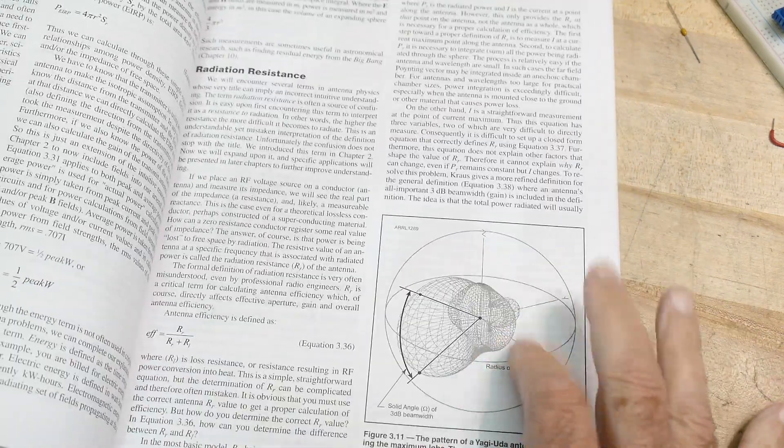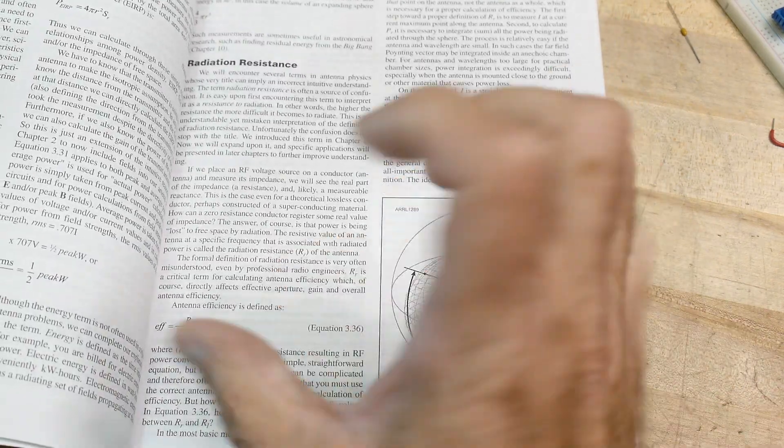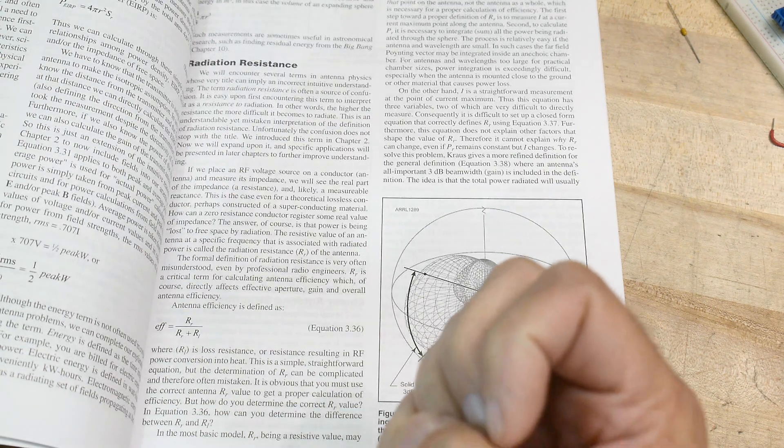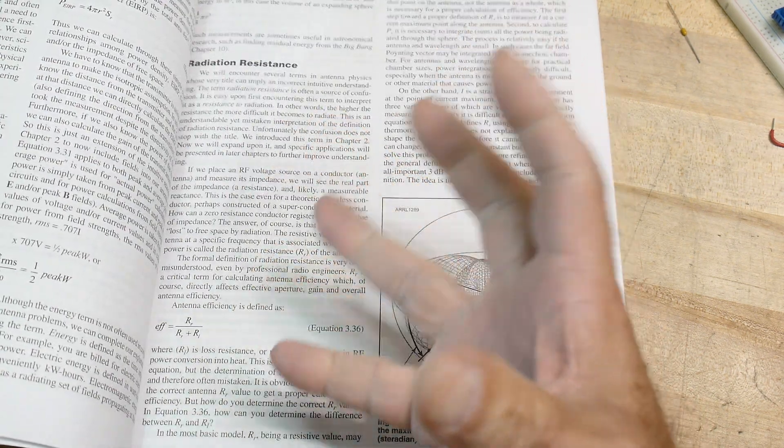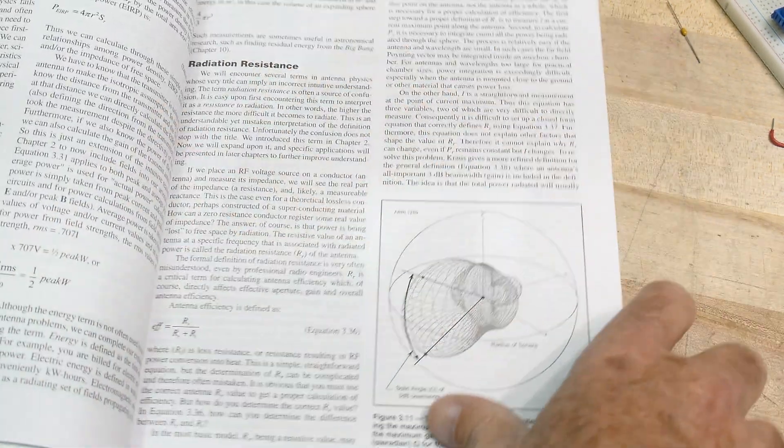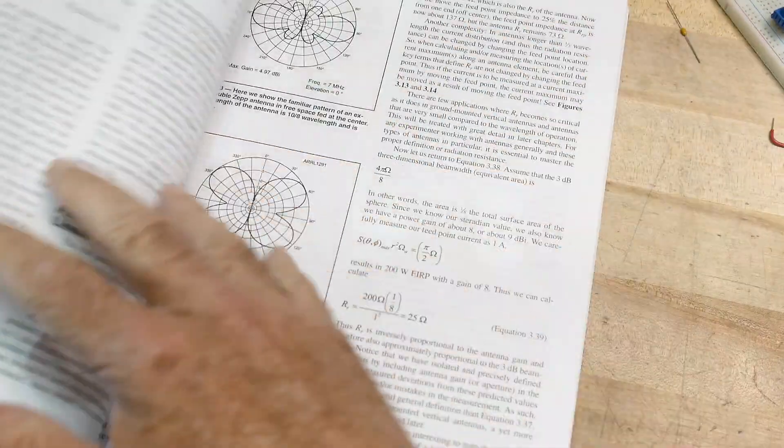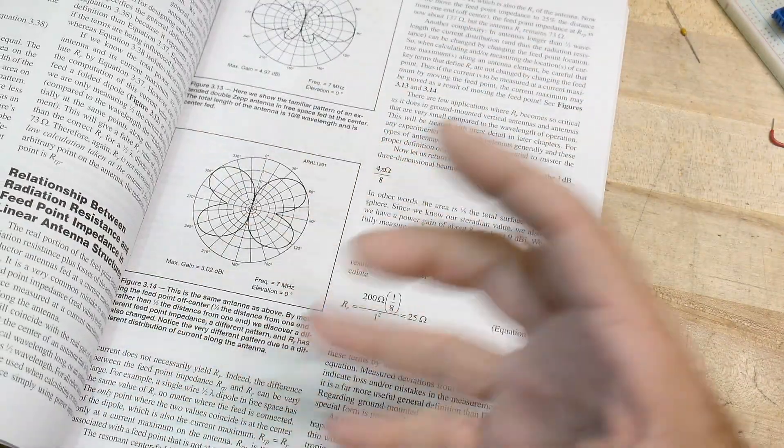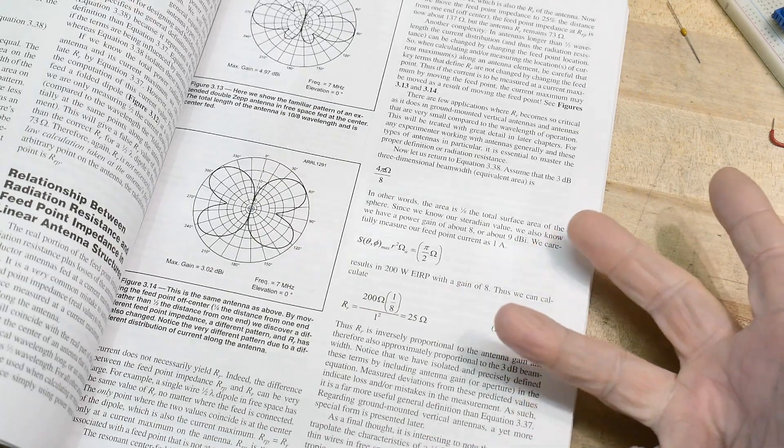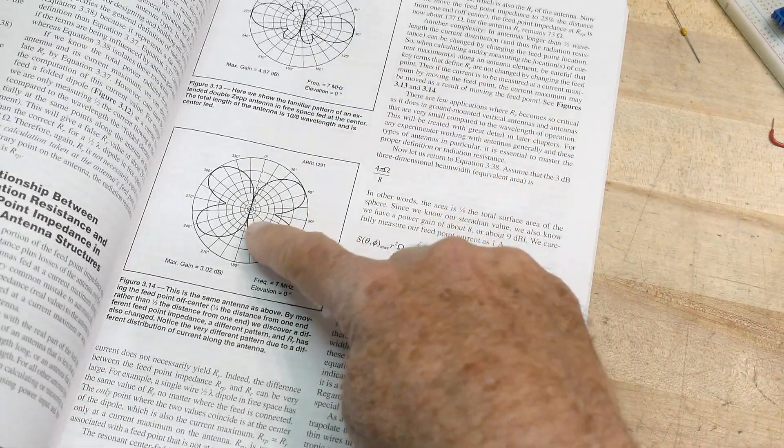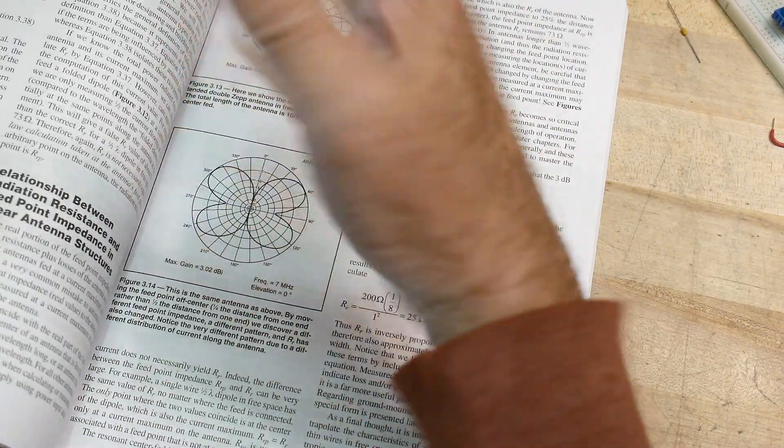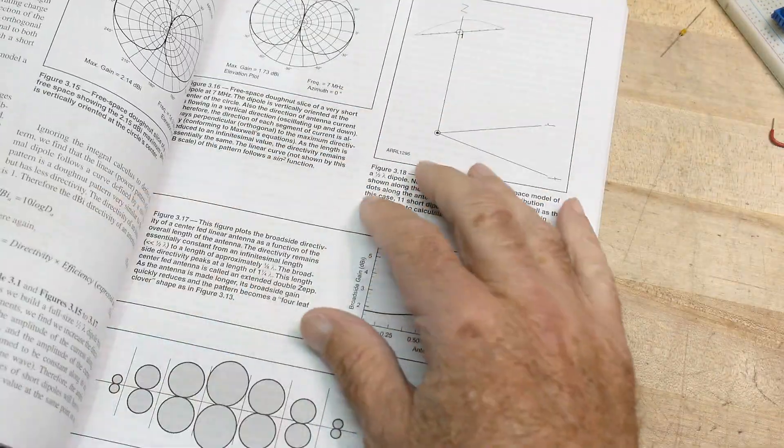Talks about power and then it gets into the actual three-dimensional far field patterns of antennas. Why do they have the shape that they have? A dipole is a donut, but why do other antennas have weird shapes, you know, cloverleaf and other things.